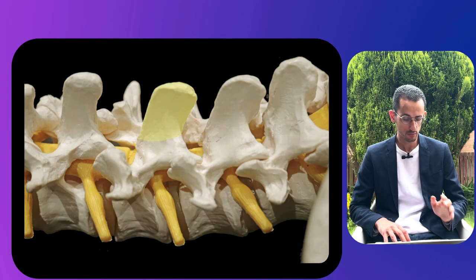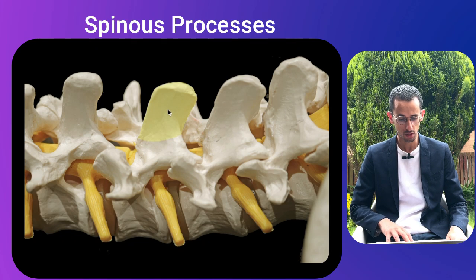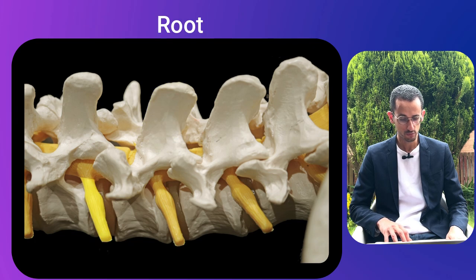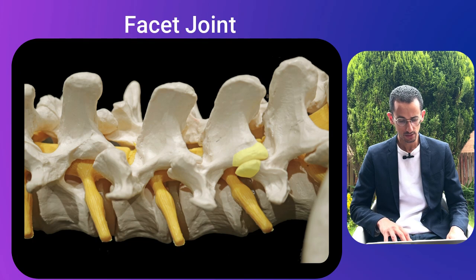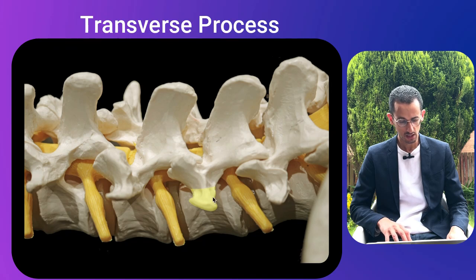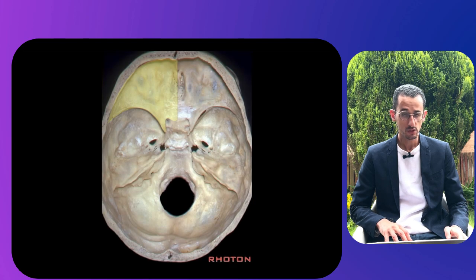In this lateral view of the spine, the spinous processes are highlighted at different levels. We can see the nerve root exiting the foramen, the facet joint, the transverse process, and the pars — the junction of the pars with the transverse process marks the entry point for the pedicle.